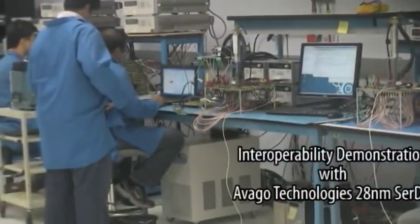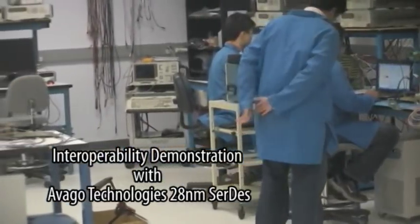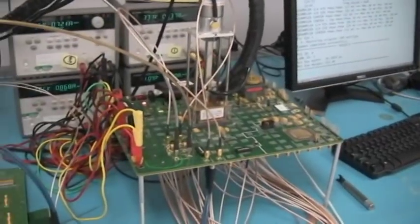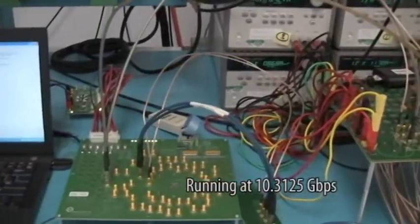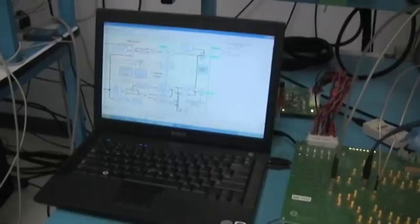Welcome to the video demonstration of interoperability between the MOSIS bandwidth engine IC and Avago's 28nm CERTES test chip. This demonstration will show the MOSIS bandwidth engine CERTES interface running at 10.3125 gigabits per second in a full duplex link integrating with Avago's CERTES test chip.